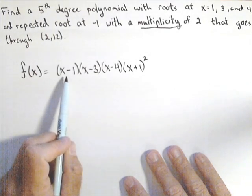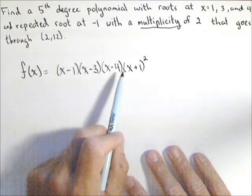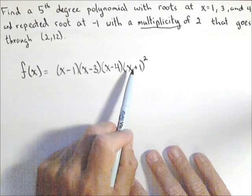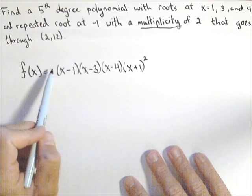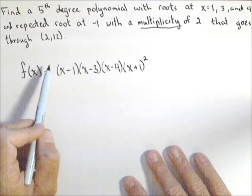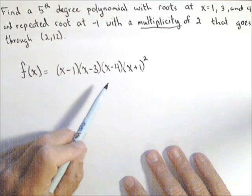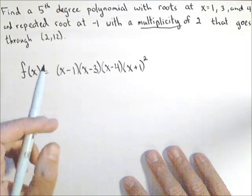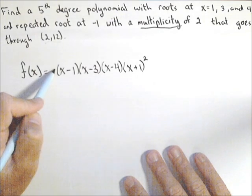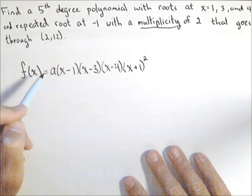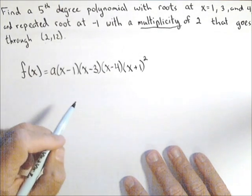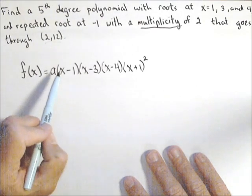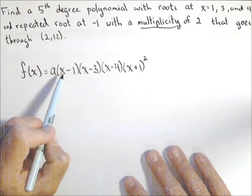Now, there's an infinite amount of polynomials that goes through these zeros, even with that multiplicity of 2, because every time I change the number out front, I get a different polynomial, but it still will have the same roots. So what that point (2,12) is going to allow us to do is solve for what that should be. So we should put a variable there, for instance, a. You can use pretty much anything, just don't use x since you already used it here.